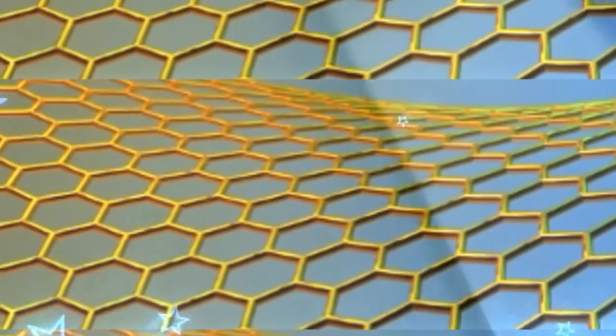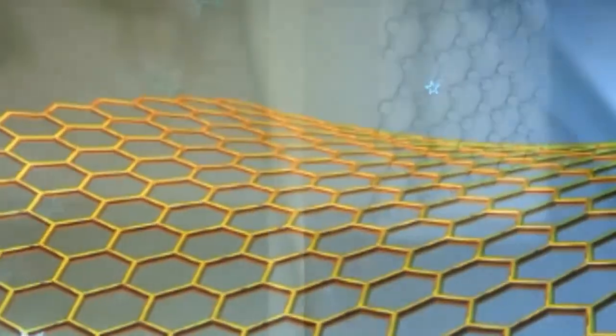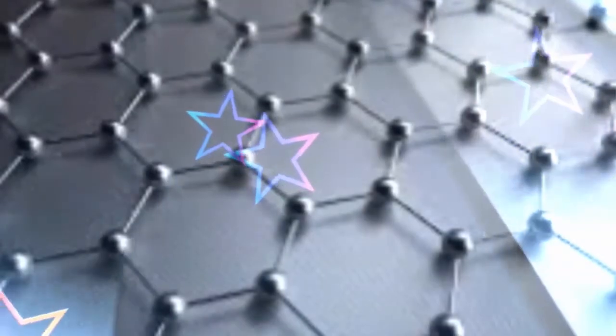Graphene has excellent electronic, mechanical, thermal, and optical properties as well. Its uses range from improving battery performance in energy devices to cheaper solar panels.